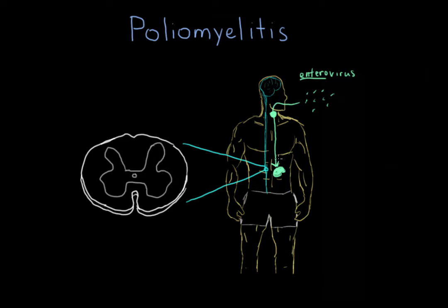Once it has replicated to a certain number, so there's a large amount of the virus in the body, the virus is somehow able to spread to the central nervous system. It actually gets to the spinal cord and attacks the cells of the spinal cord — specific cells, which I'll get to in a moment.